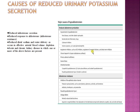Causes of reduced aldosterone production include hyporenin hypoaldosteronism, seen with renal disease, NSAIDs, calcineurin inhibitors, volume-expanded states like glomerulonephritis, ACE inhibitors, ARBs, direct renin inhibitors, and chronic heparin use, which impairs aldosterone synthesis. Primary adrenal insufficiency, severe illness, and inherited disorders like congenital hypoaldosteronism and pseudo-hypoaldosteronism are also causes. Aldosterone resistance can occur with potassium-sparing diuretics — spironolactone, eplerenone, amiloride, triamterene — and antibiotics trimethoprim and pentamidine, as well as pseudo-hypoaldosteronism type 1 and distal tubule defects from reduced sodium delivery.